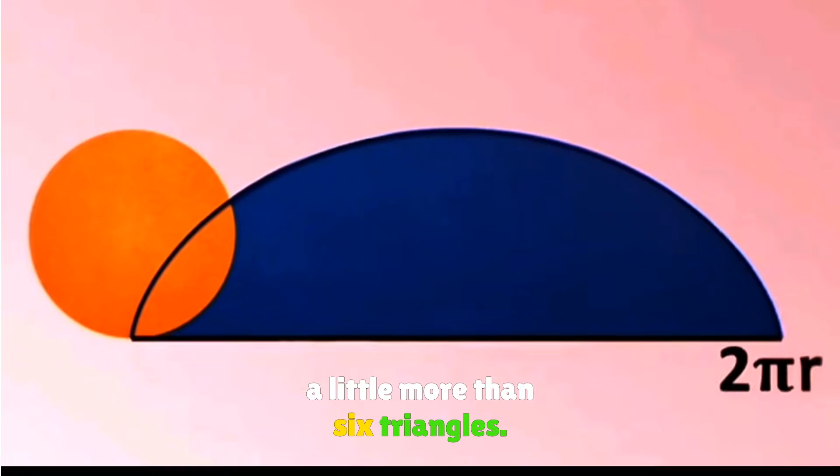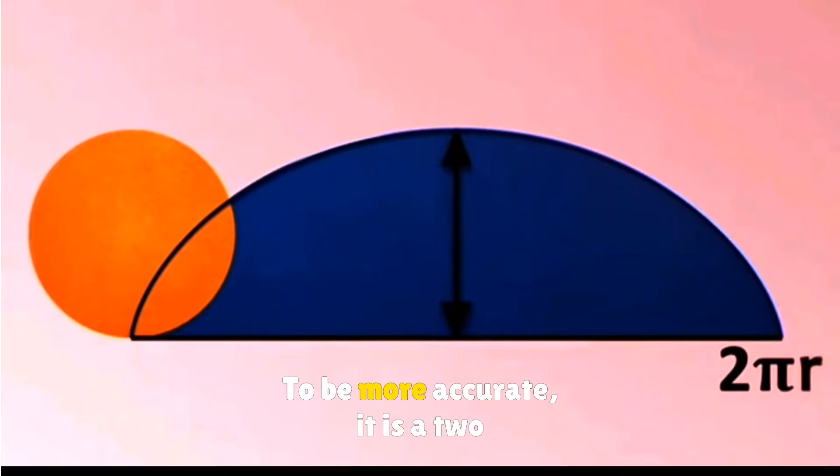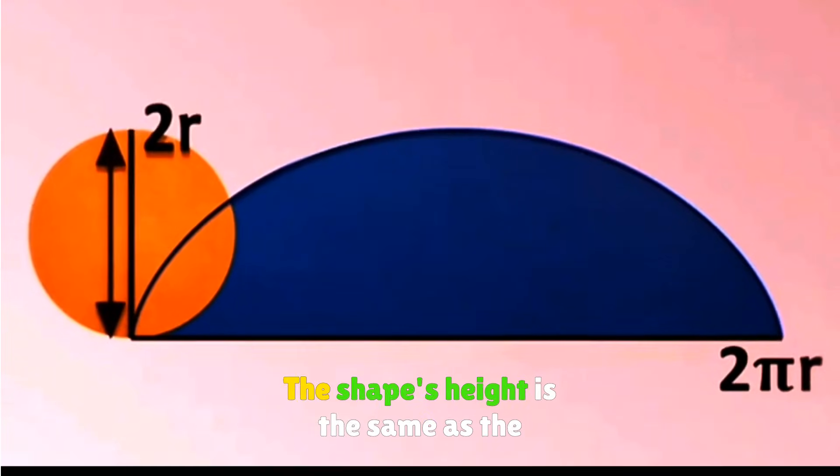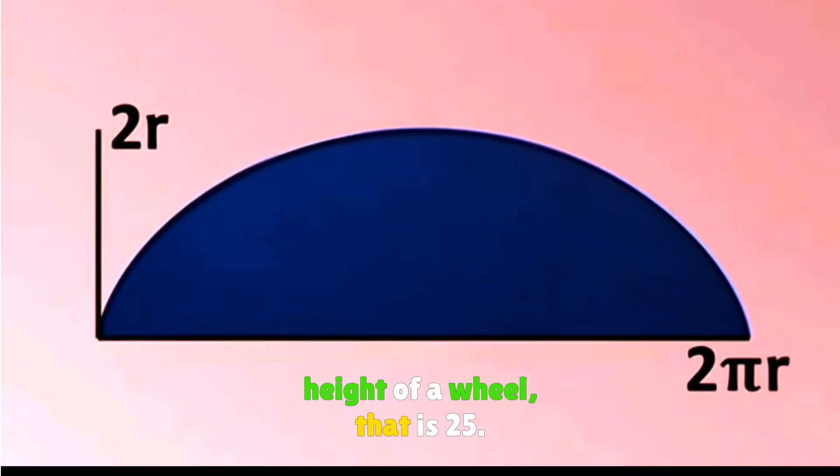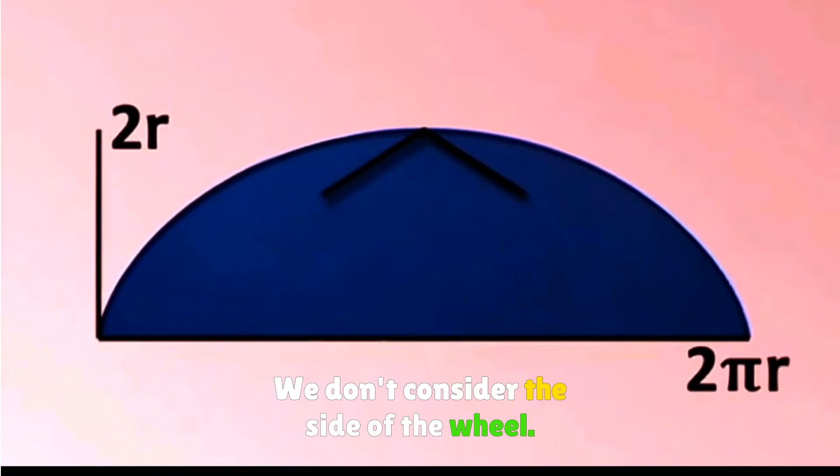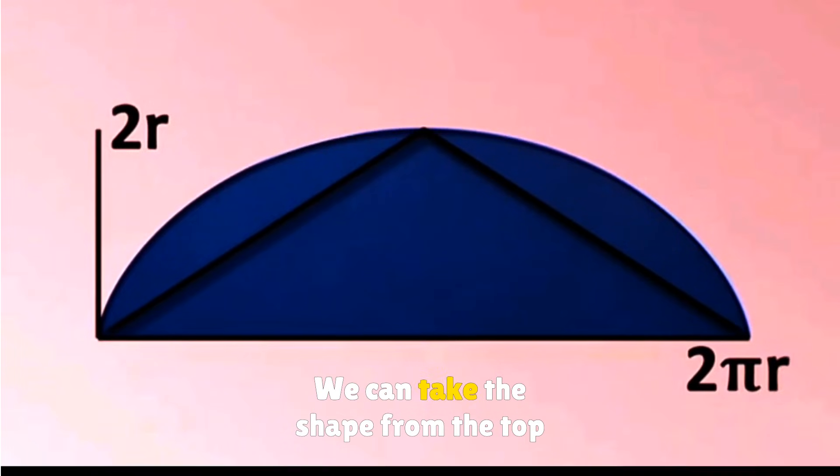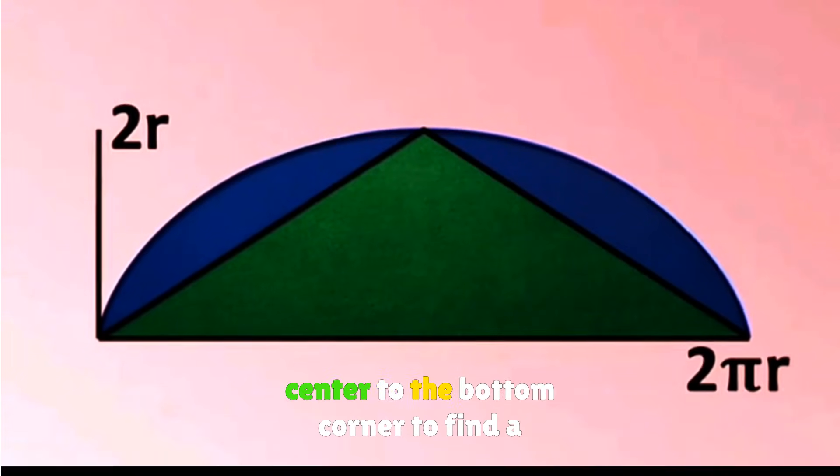To be more accurate it is two parts of a wheel. The shape's height is the same as the height of a wheel, that is 2r. We can take the shape from the top center to the bottom corner to create a triangle.